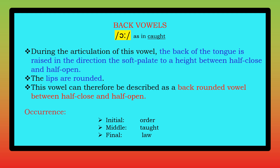During the articulation of this vowel, the back of the tongue is raised in the direction of the soft palate to a height between the half-close and half-open position. That is why there is a slightly more open position — between half-close and half-open. In the tongue diagram this is called between the second and third lines.